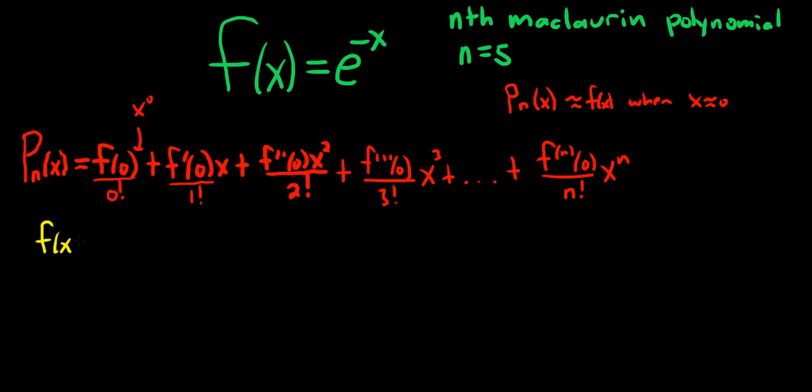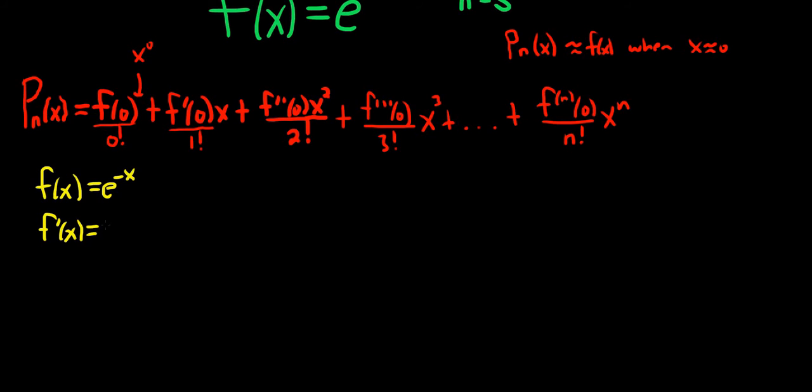So we have f of x equal to e to the negative x. And then the derivative of f of x, well, we're going to use the chain rule. The derivative of e to the x is e to the x. So here it's e to the x times the derivative of the inside. The derivative of the inside is negative 1, so it'll be negative e to the negative x.